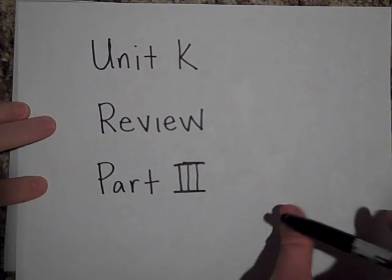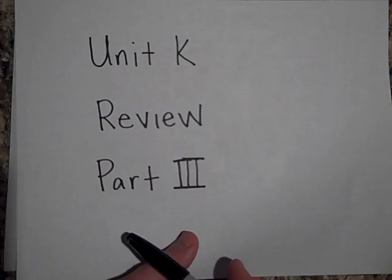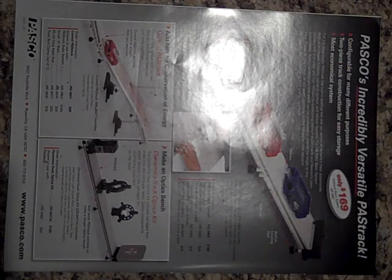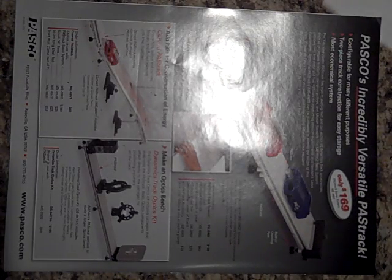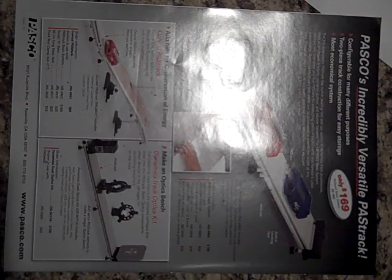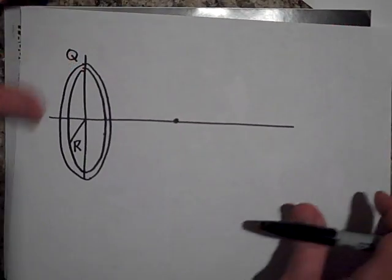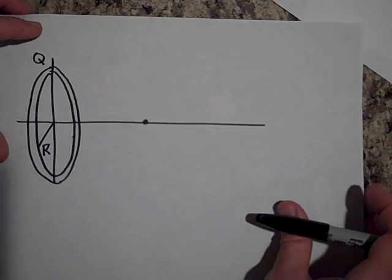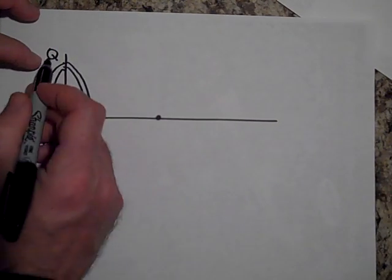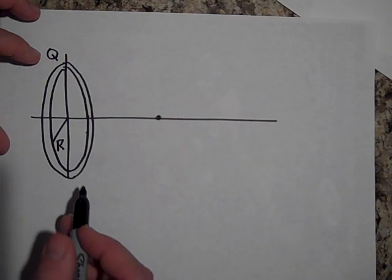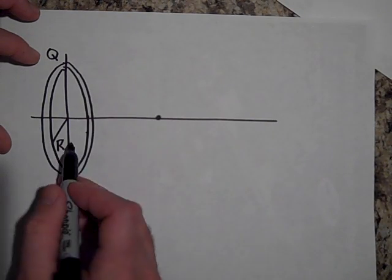Okay, part three of unit K review. Alright, so let's first talk about this one. Okay, we have a ring of charge, charge Q.